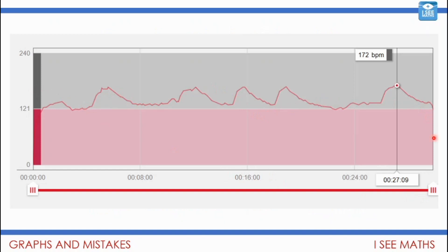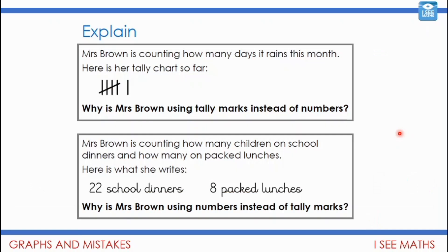We also looked at heart rate when running, which changes gradually over time, so a line graph was the appropriate form to use. Then we looked at why we use tally marks. Mrs Brown is counting how many days it rains this month — here is her tally chart so far. Why is she using tally marks instead of numbers? And in the second example, Mrs Brown is counting children on school dinners and packed lunches, and she uses numbers instead. Why is she making those choices? Pause the video and have a think.